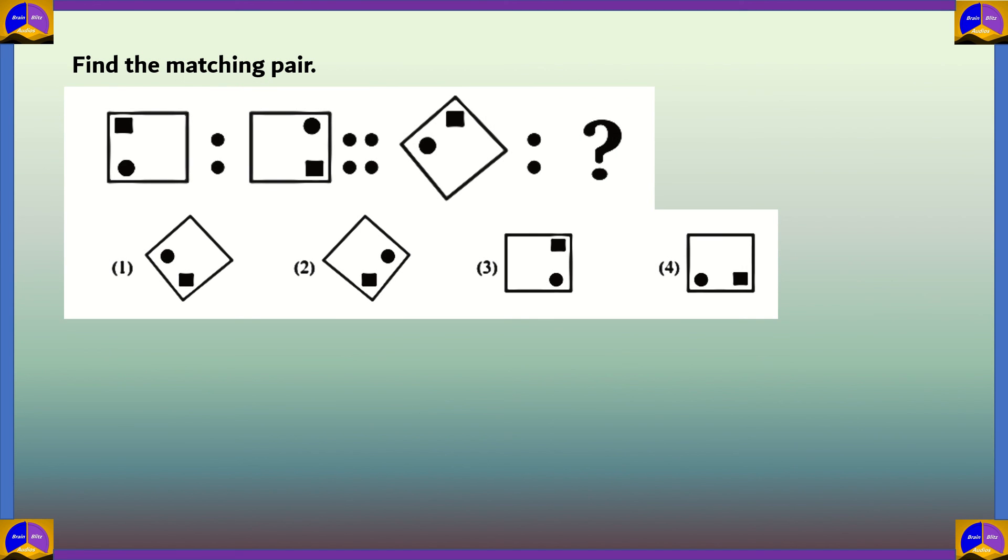Next question. Find the matching pair, options 1, 2, 3, 4. Let's look at the pattern between these two figures. At first, the square is in the top left corner, while in the second figure the square is in the bottom right corner.